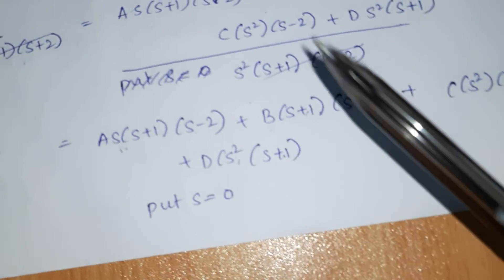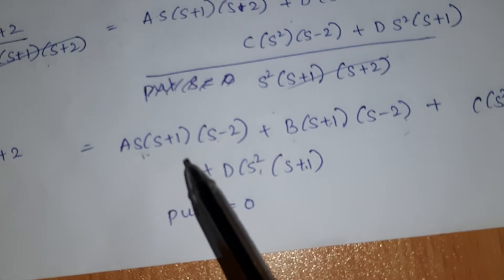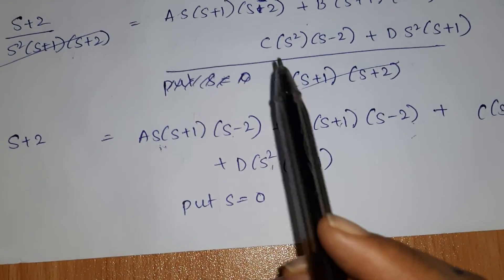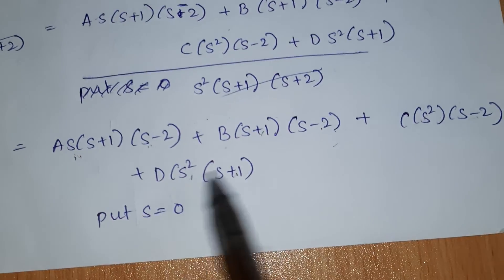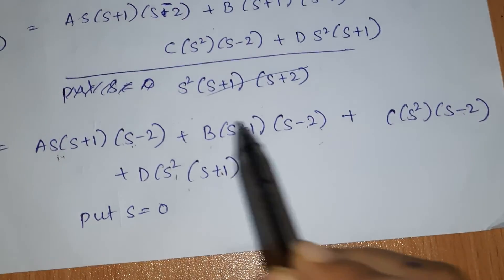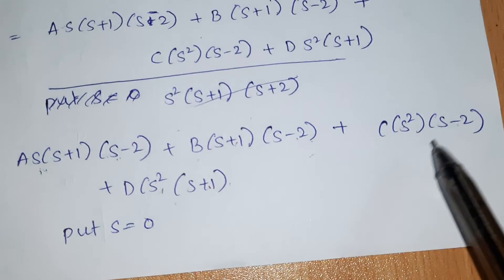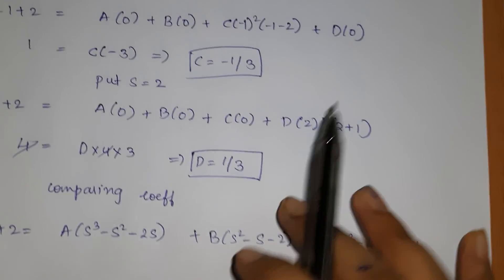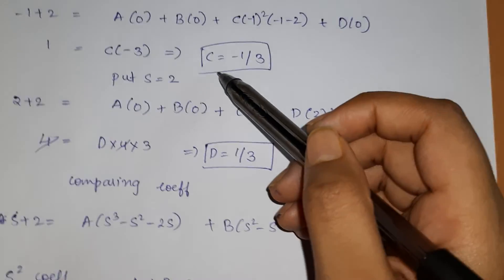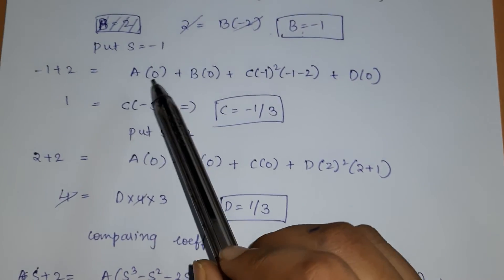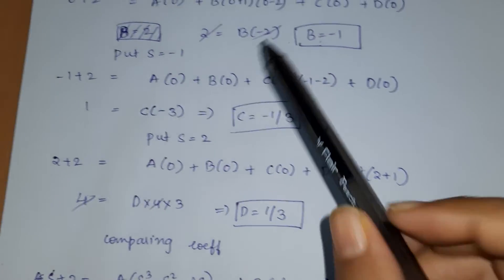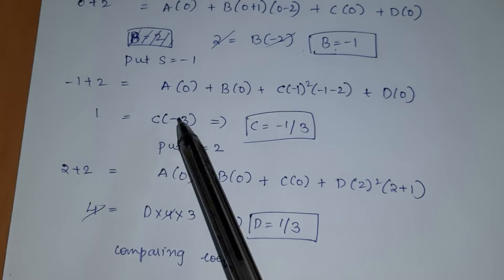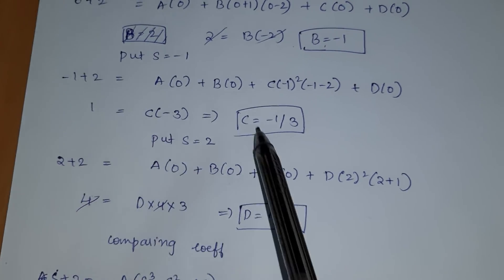Now put s = -1. When s = -1, the terms with A, B, and D all become zero. Only the C term remains: C·(-1)²·(-1-2) = C·1·(-3). So (-1+2) = 1 = C·(-3), giving C = -1/3.